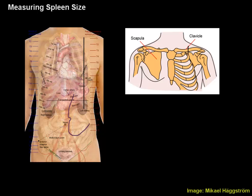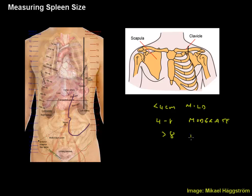We would divide spleen sizes into: less than four centimeters, which usually implicates mild splenic enlargement; four to eight centimeters, which would be moderate; and more than eight centimeters, which would be considered massive splenic enlargement.